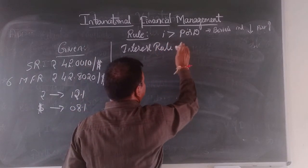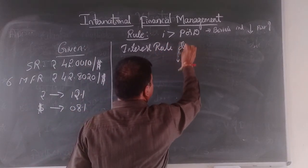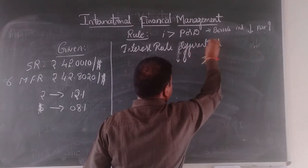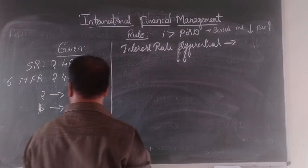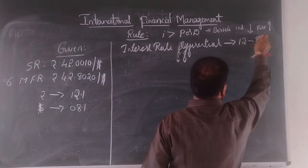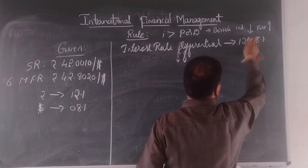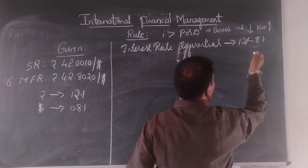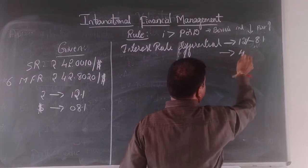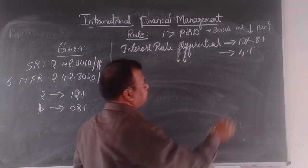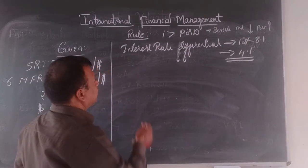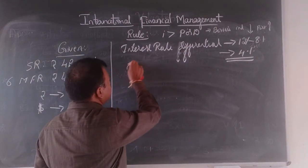Interest rate differential: rupee interest rate is 12 percent and dollar interest rate is 8 percent, so the interest rate differential comes to 4 percent.